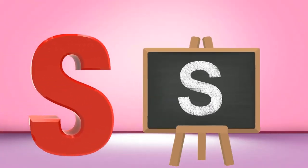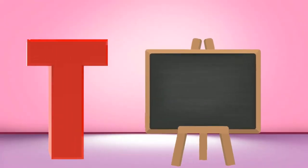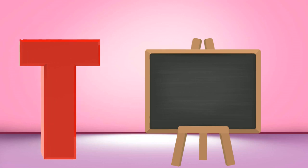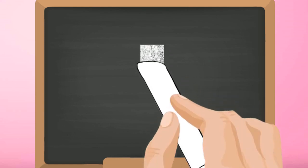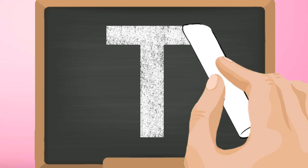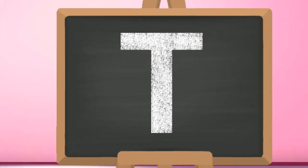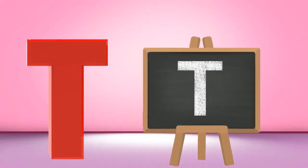Capital S. T, capital T. Start from the top and draw a standing line down. Go back to the top and draw a slanting line across. Capital T.